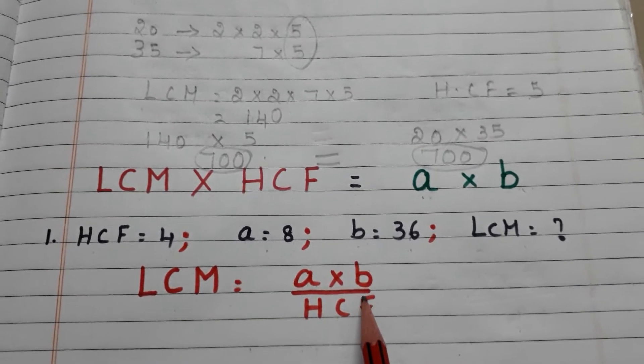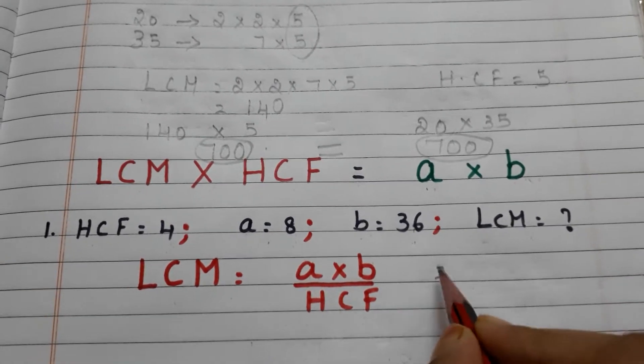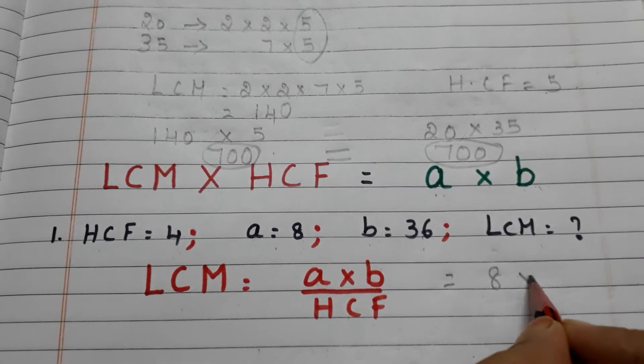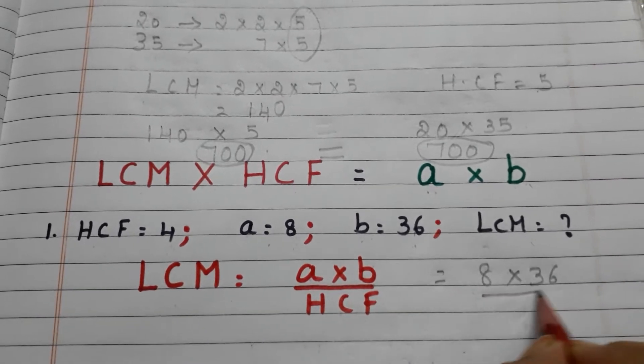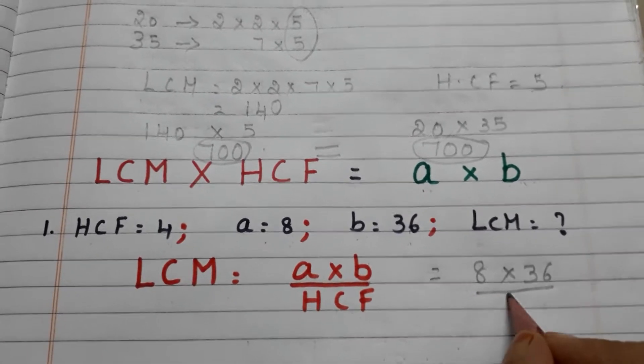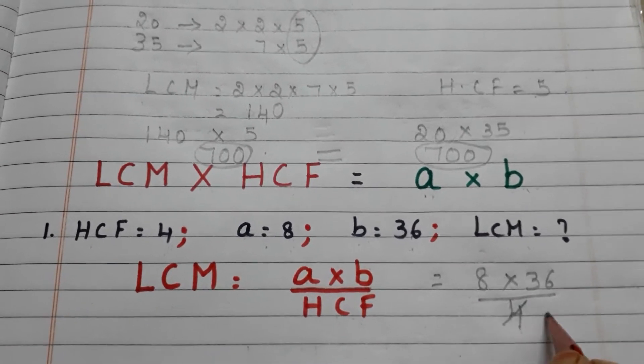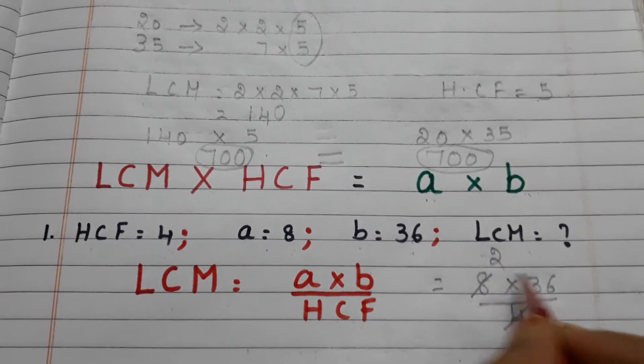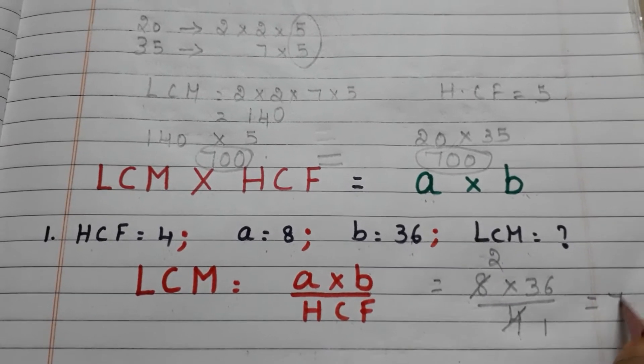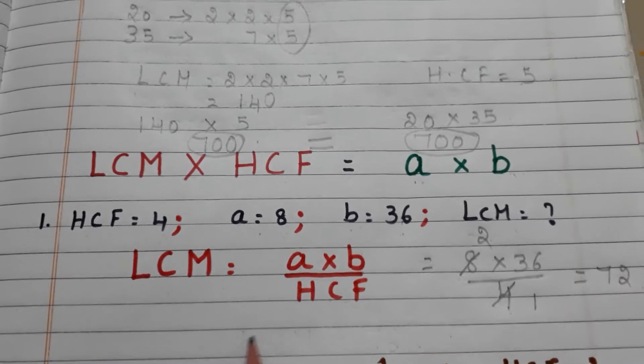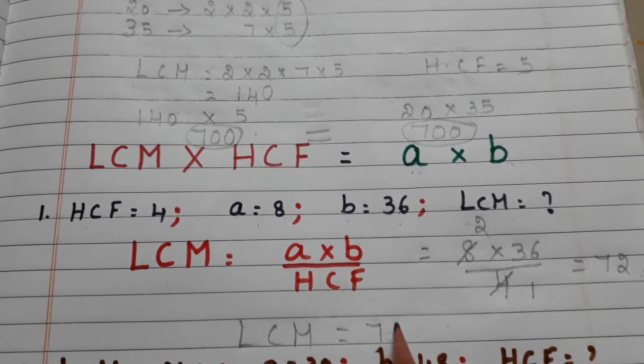Now apply the values in the formula. What is a? 8. And what is b? 36. By what is HCF? 4. 4 into 8 is 32, 4 into 36 gives us 2 into 36, which is 72. So the LCM equals 72.